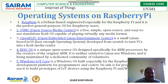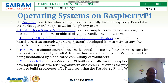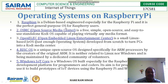Raspbian is one of several operating systems which can run on the Raspberry Pi computer system. It is a Debian-based OS engineered specially for Raspberry Pi, and it is the perfect general purpose operating system for Raspberry Pi.